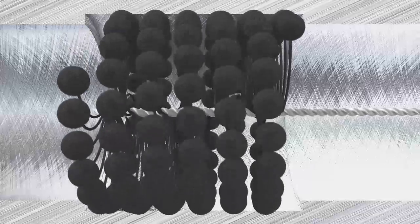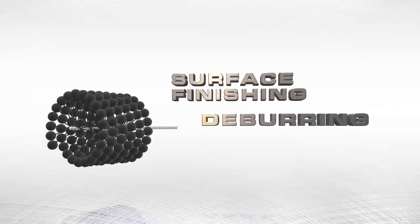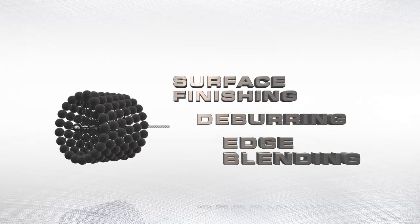The Flex Hone tool has three distinct functions: surface finishing, deburring, and edge blending. The tool can perform one or all three functions at the same time.